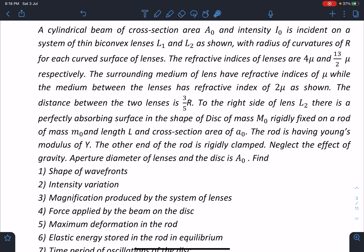The distance between the two lenses is 3R/5. To the right side of lens L₂, there is a perfectly absorbing surface in the shape of a disc of mass m₀ rigidly fixed on a rod of mass m₀ and length L and cross-section area A₀. The rod has Young's modulus of Y, and the other end of the rod is rigidly clamped.